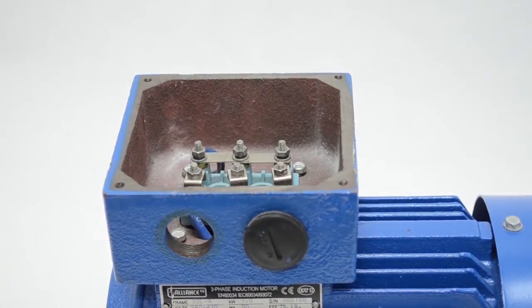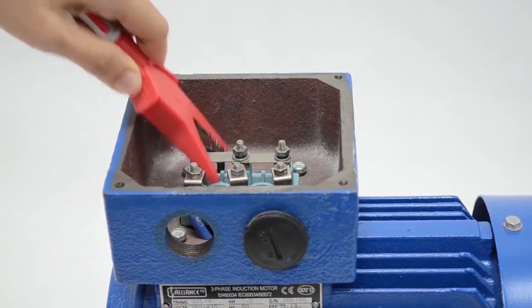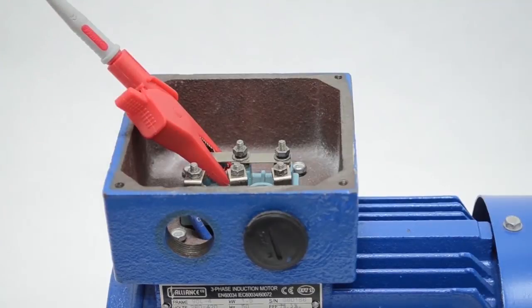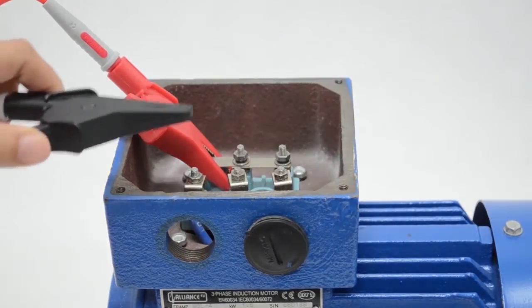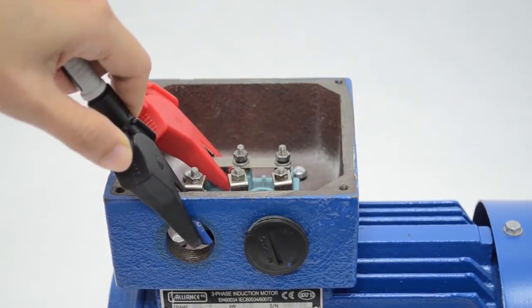Connect the positive test lead of the insulation resistance tester to one of the terminal leads. Connect the negative test lead to the motor frame.